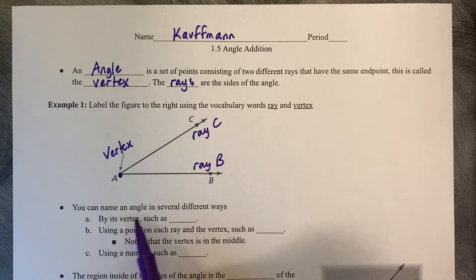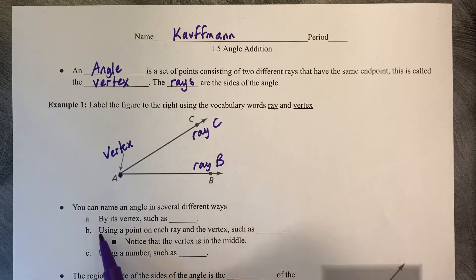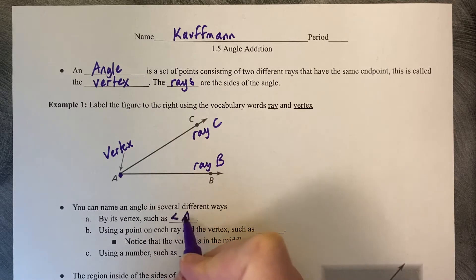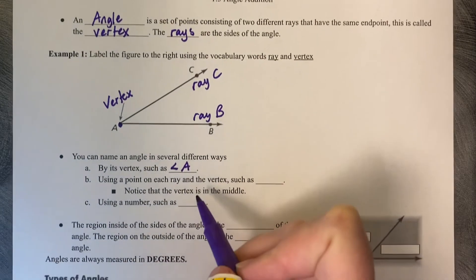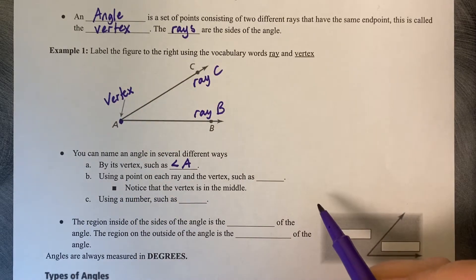You can name this angle in several different ways. The first way is to label it by its vertex, such as angle A. This does look like a less than symbol, but you flatten it out on the bottom and it makes it into an angle symbol. So angle A is one way to name this.